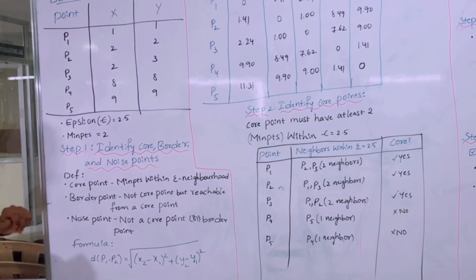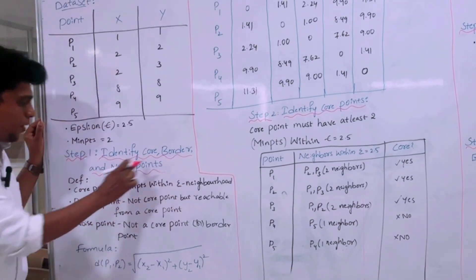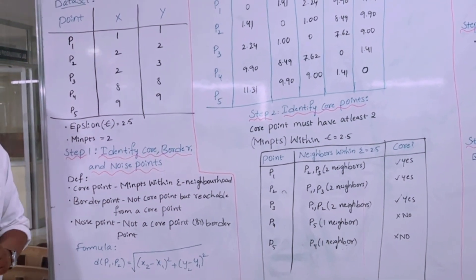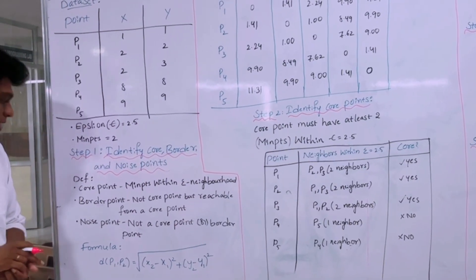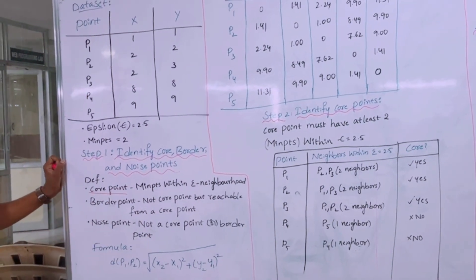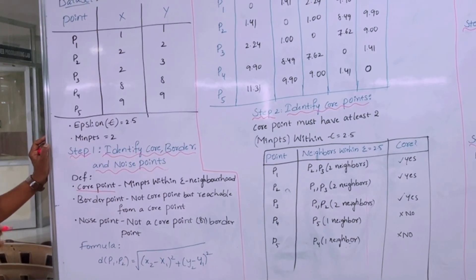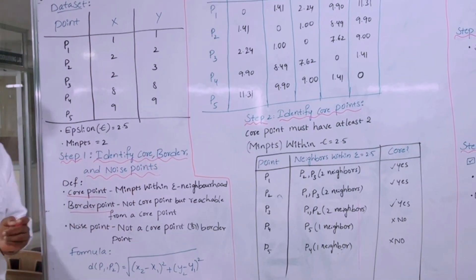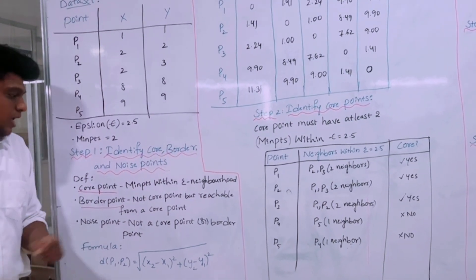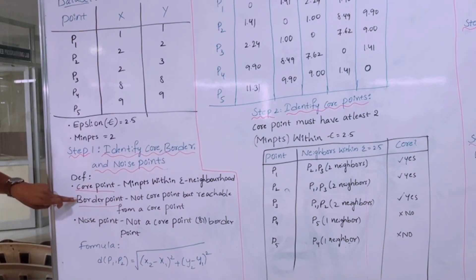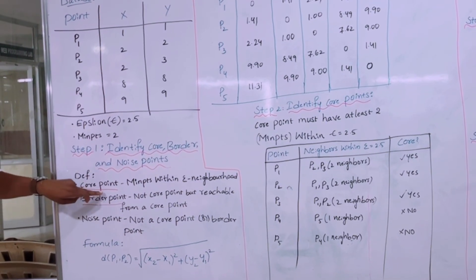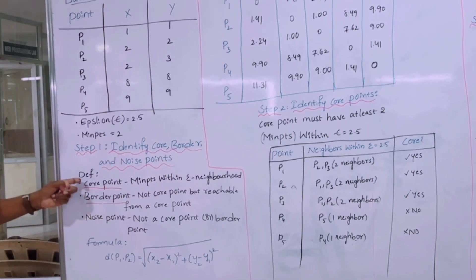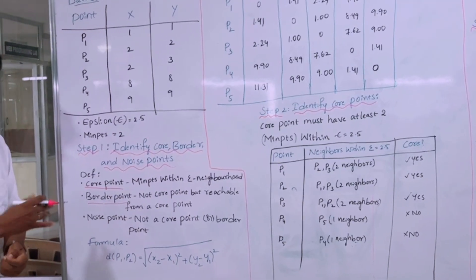The first step is to identify core points, border points, and noise points. A core point is one that has at least the minimum number of points within its epsilon neighborhood. A border point is not a core point but is reachable from a core point. A noise point is neither a core point nor a border point.